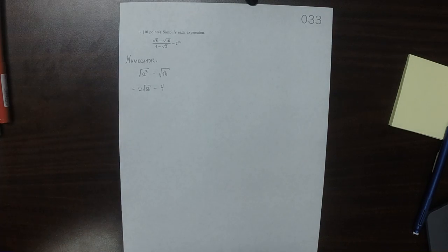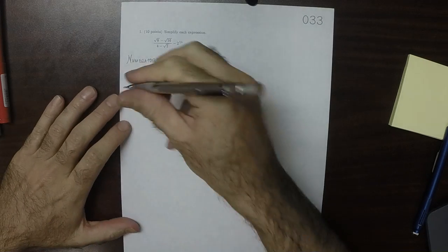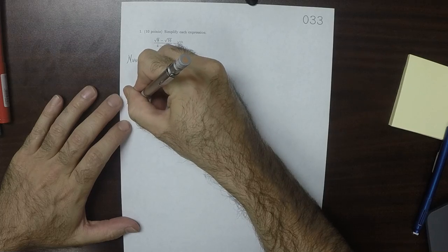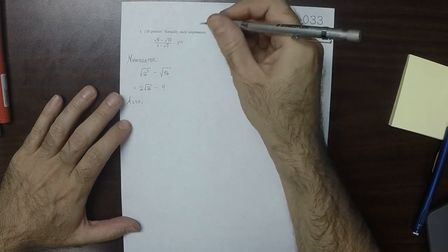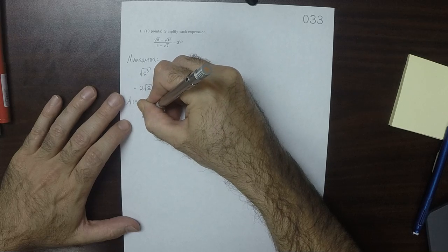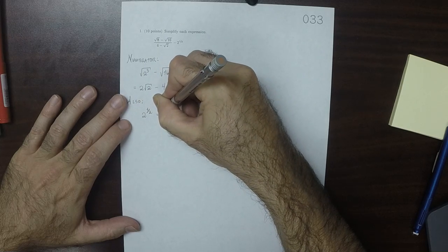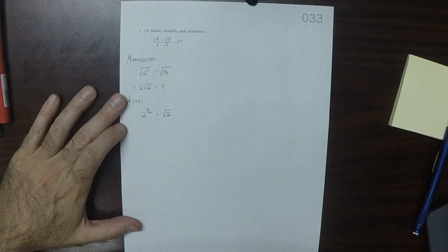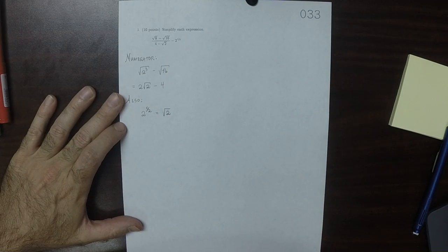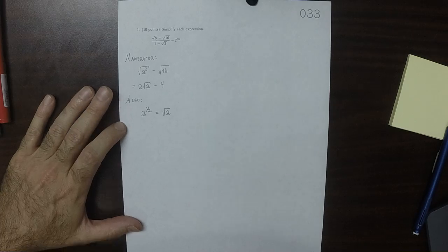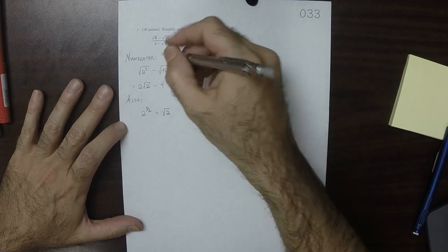So the numerator can be simplified a little bit. Recall that 2 to exponent 1/2 is square root 2. Now let's deal with the fraction.